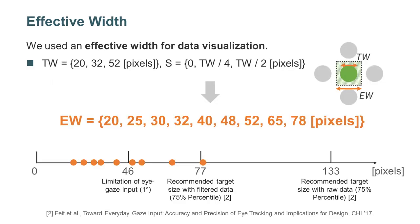We used effective width (EW) for data visualization. EW can be calculated as a combination of TW and S. Thus, the nine EWs were 20, 25, 30, 32, 40, 48, 52, 65, and 78 pixels.